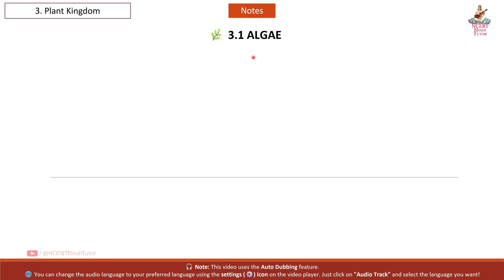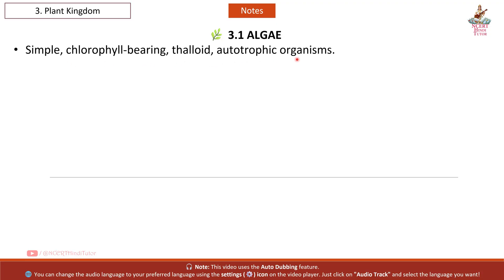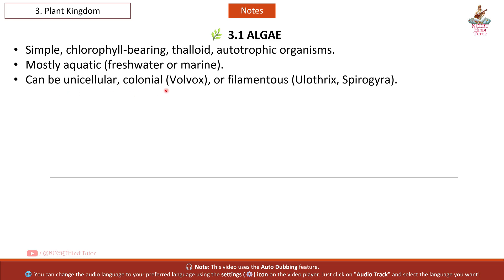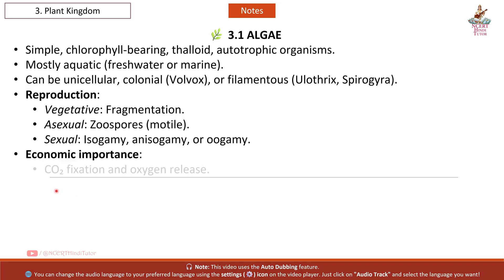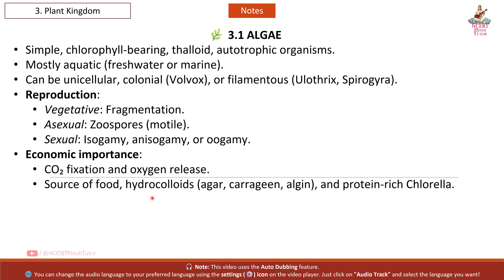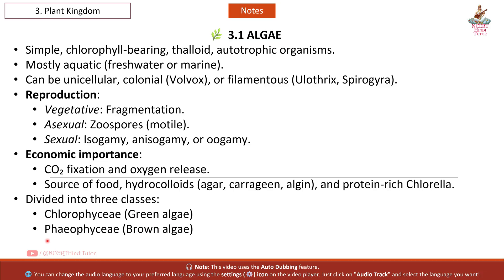3.1 Algae: Simple chlorophyll-bearing, thalloid, autotrophic organisms, mostly aquatic — freshwater or marine. Can be unicellular, colonial (Volvox), or filamentous (Ulothrix, Spirogyra). Reproduction: vegetative by fragmentation; asexual by zoospores (motile); sexual by isogamy, anisogamy, or oogamy. Economic importance: CO2 fixation and oxygen release; source of food, hydrocolloids (agar, carrageenan, algin), and protein-rich Chlorella. Divided into three classes: Chlorophyceae (green algae), Phaeophyceae (brown algae), and Rhodophyceae (red algae).